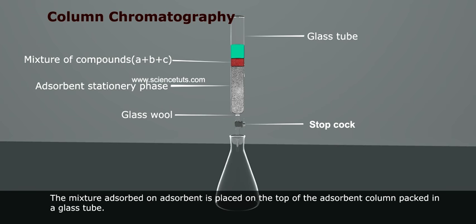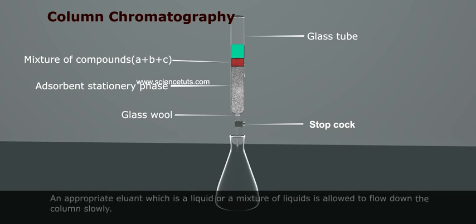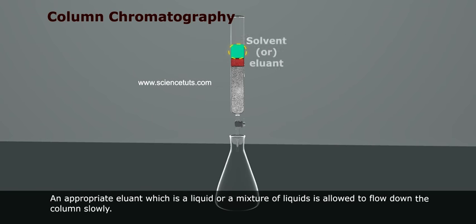An appropriate eluant, which is a liquid or mixture of liquids, is allowed to flow down the column slowly.